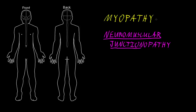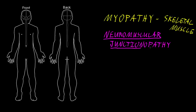Whereas myopathy refers to diffuse dysfunction of skeletal muscle. So if there's some problem with skeletal muscles in large areas of the body diffusely, we call that myopathy. Or if there's diffuse dysfunction of the neuromuscular junction, you could call that neuromuscular junctionopathy or disorders of the neuromuscular junction.